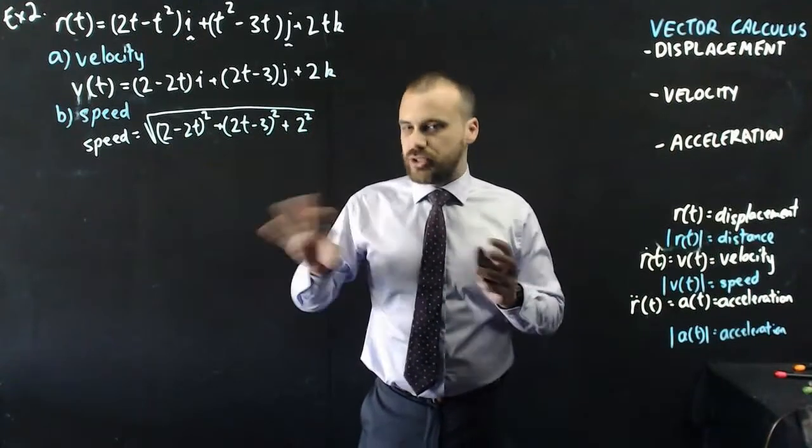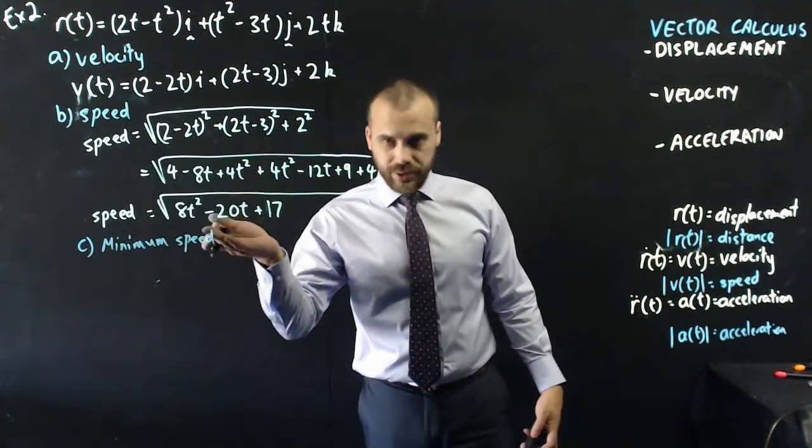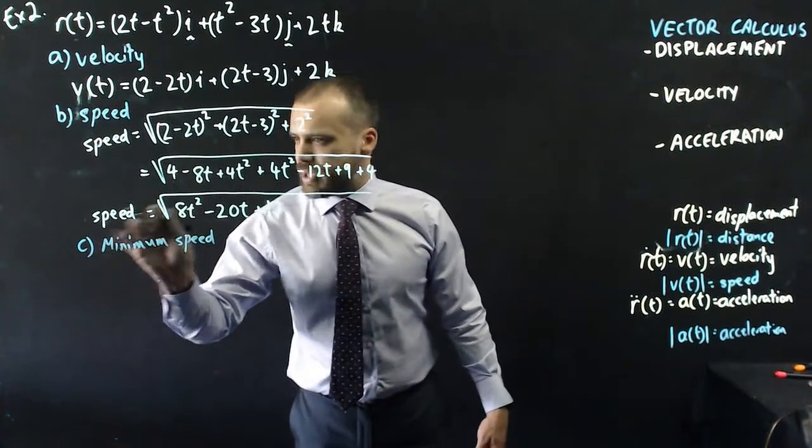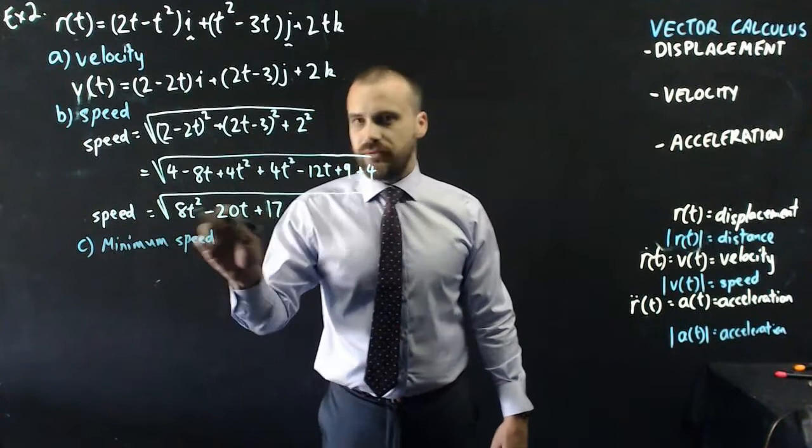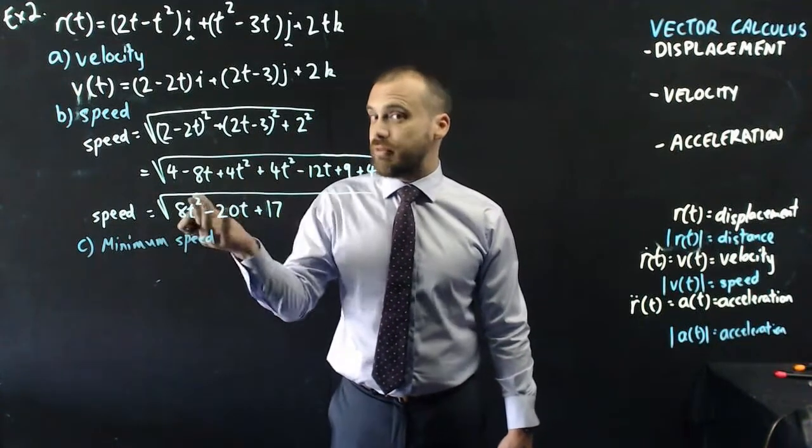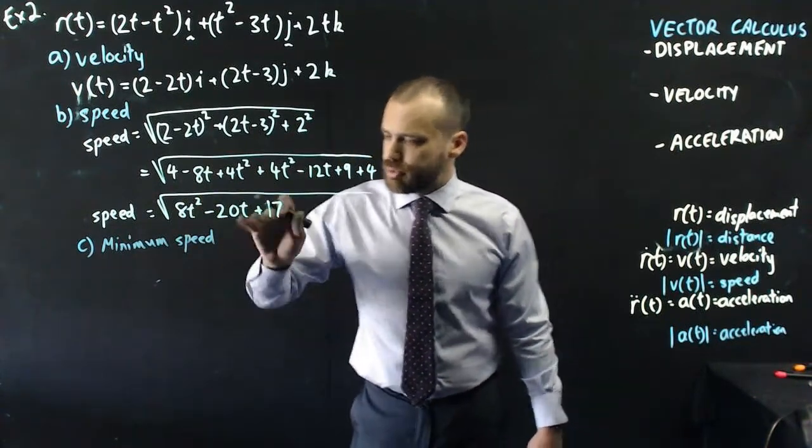Now, it's at this point I realize that I can expand that, expand that, expand that, collect terms, make a nice little quad. Now, we get something that looks like this. That means that the speed is equal to the square root of all of that, and you can plug in t values, and you'll find out the speed of our particle at any given time.